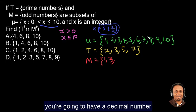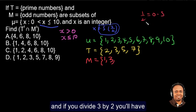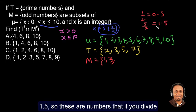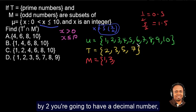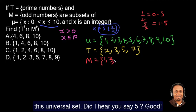These are numbers that if you divide it by 2, you are going to have a decimal number. If you divide 1 by 2, you'll have 0.5. If you divide 3 by 2, you'll have 1.5. So these are numbers that if you divide by 2, you are going to have a decimal number. So what is the next odd number in this universal set? Did I hear you say 5? Good.